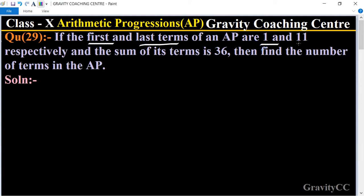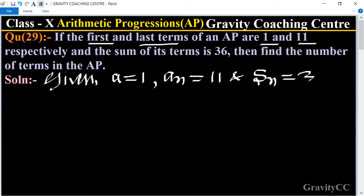In this question, the first term and the last term are given as 1 and 11. Given, the first term means a equals 1, and the last term means a_n equals 11, and sum of its terms means S_n equals 36.